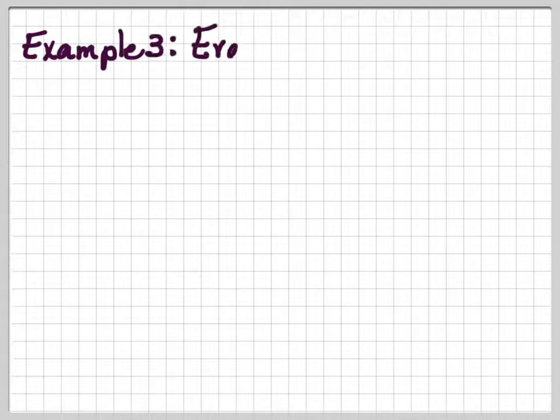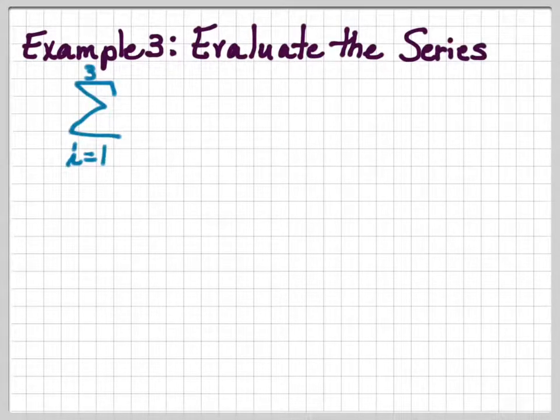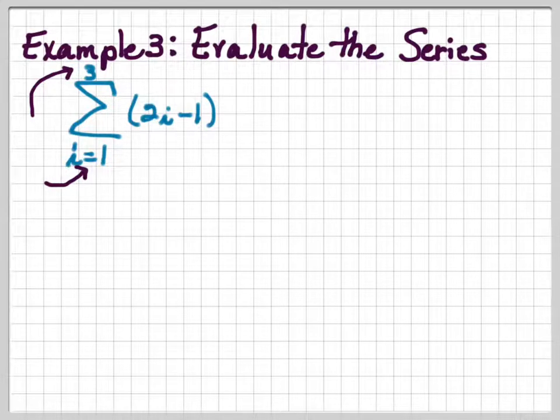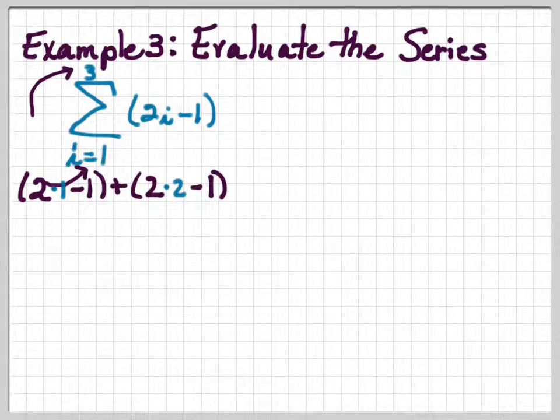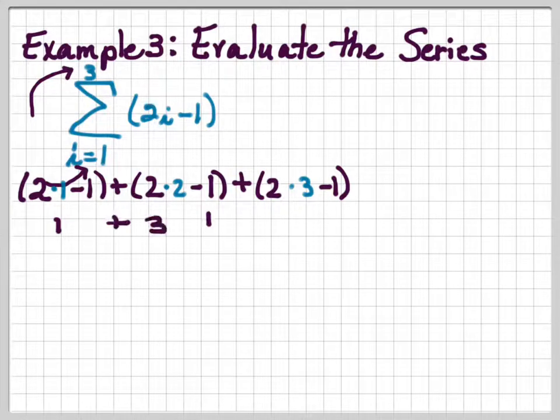Let's try another one. Evaluate the series i equals 1 to 3. We're going to start at 1, end at 3. Start with the first term, end with the third term. And it's going to be 2i minus 1. So I have 2 times 1 minus 1 plus 2 times 2 minus 1 plus 2 times 3 minus 1, which is 1 plus 3 plus 5, or 9.